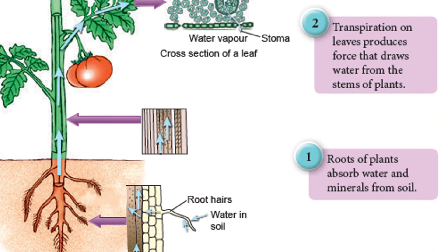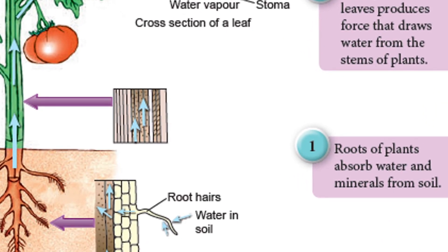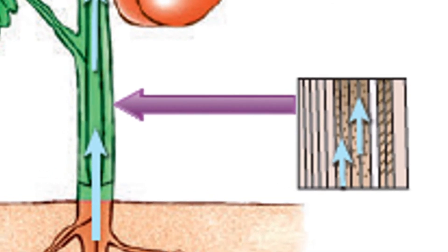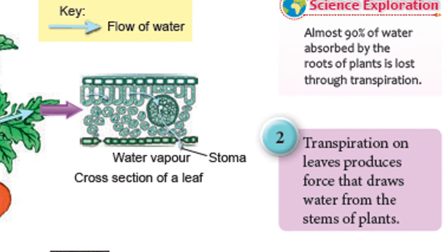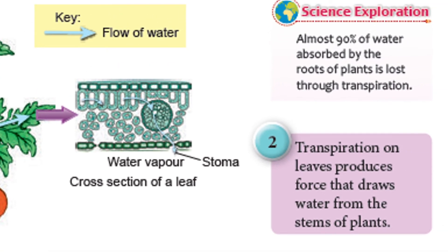During transpiration, water is taken from the soil into the xylem tissue of the roots by the root hairs. Water and minerals are transported to the stem through xylem. Then water evaporates through the stoma in the form of water vapor. Transpiration on the leaf produces a force that draws water from the xylem of the stem up to the leaves.